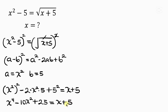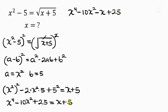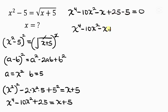Our next step is to move everything on the right hand side to the left. This becomes x to the fourth minus 10x squared, then minus x, plus 25, minus 5, equal to 0. Simplifying: x to the fourth minus 10x squared minus x plus 20 equals 0.